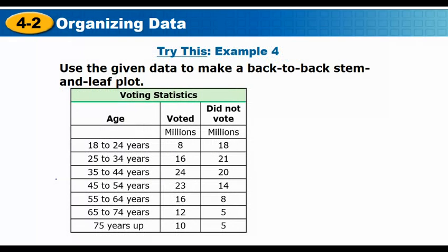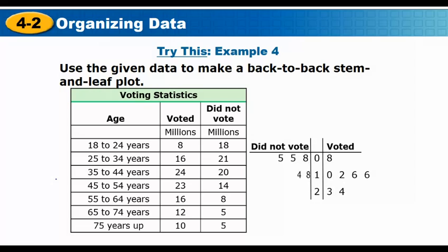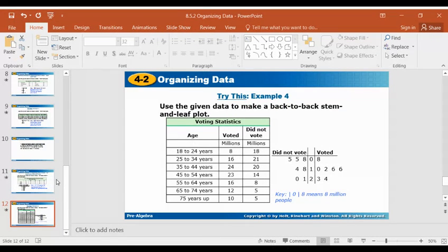We're also asked to make a back-to-back stem-and-leaf plot using made-up statistics about voting — comparing the number of millions who voted versus those who did not vote. That comparison is displayed in the back-to-back plot. And that's it for this lesson on organizing data.